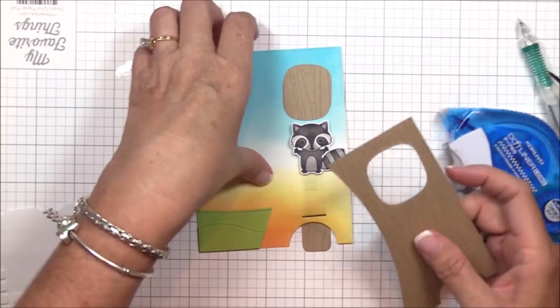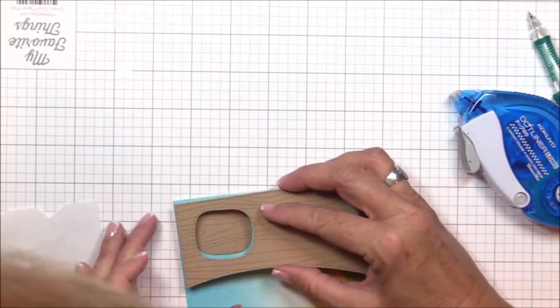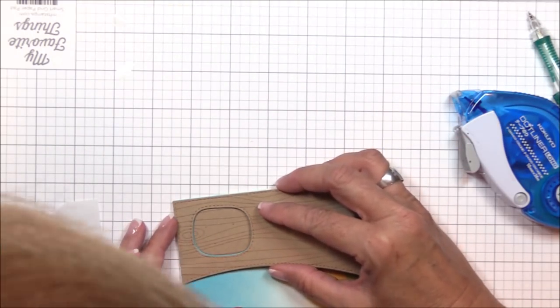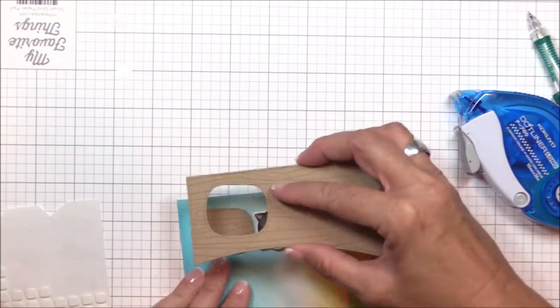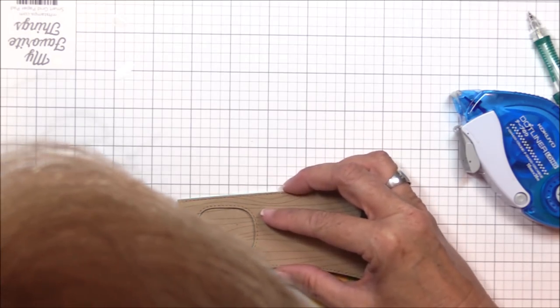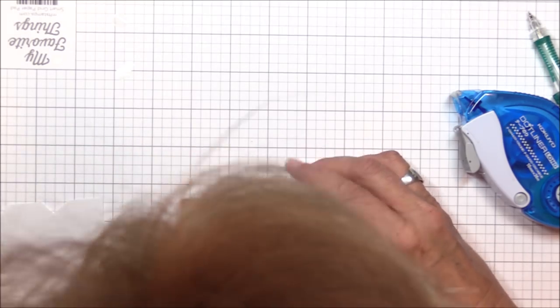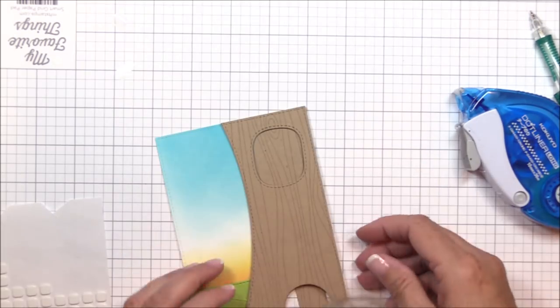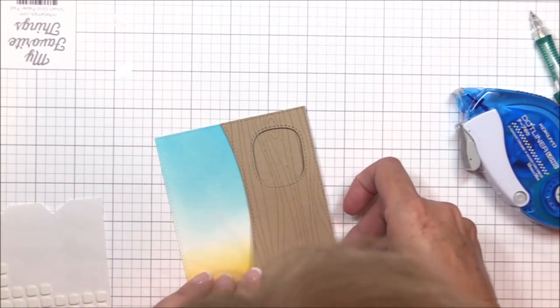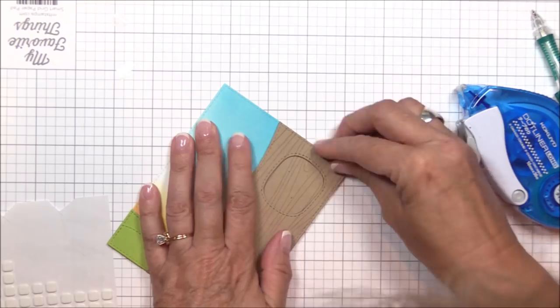And now I can adhere the grass to the image panel with some tape runner adhesive. Next, I'm adhering the tree trunk to the right side of the image panel with some foam squares. You'll notice that I didn't add any adhesive to the outside edge of the tree trunk in order to keep the raccoon's tail from catching on anything as it travels up and down. And I was careful to align the tree trunk window and bottom notch with the image panel.